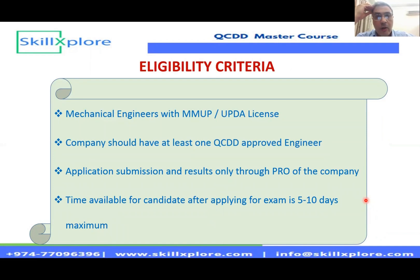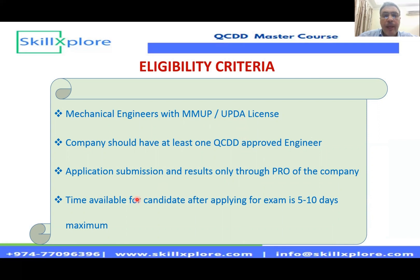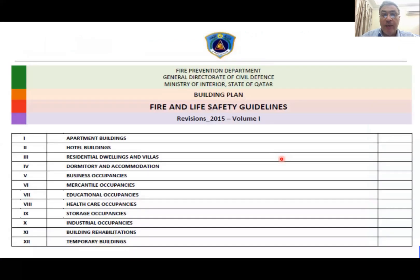Eligibility requires UPDA certification. This certification process goes through your company, which means your company should have an activity within its registration card for life safety systems — such as installation for firefighting, fire alarm, mechanical firefighting, and smoke management. The process is handled through the company's PRO, who applies online with the company registration card, license card, and your valid UPDA license. Once applied, you will receive a message to go for the exam within five to ten days — one to two weeks maximum.